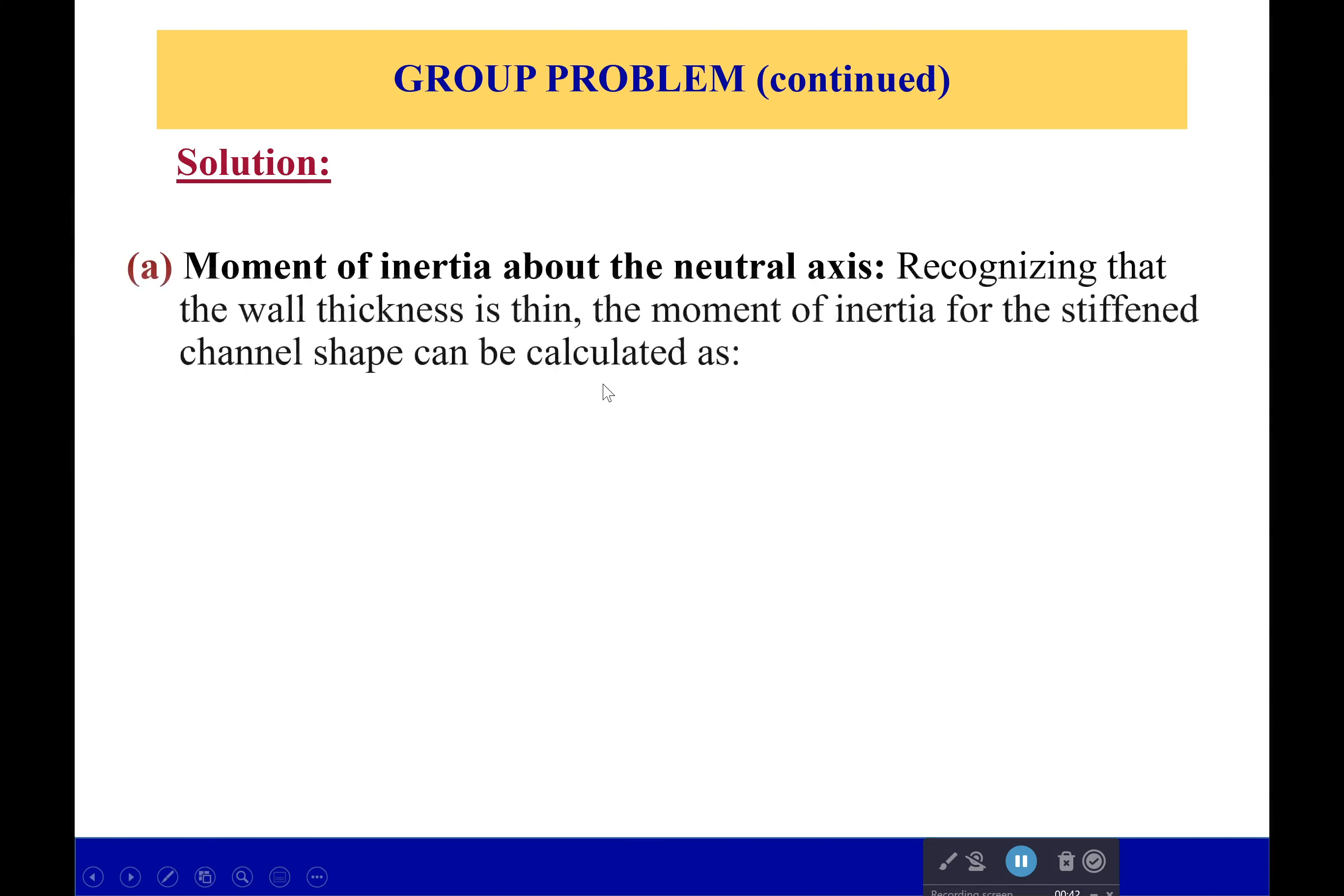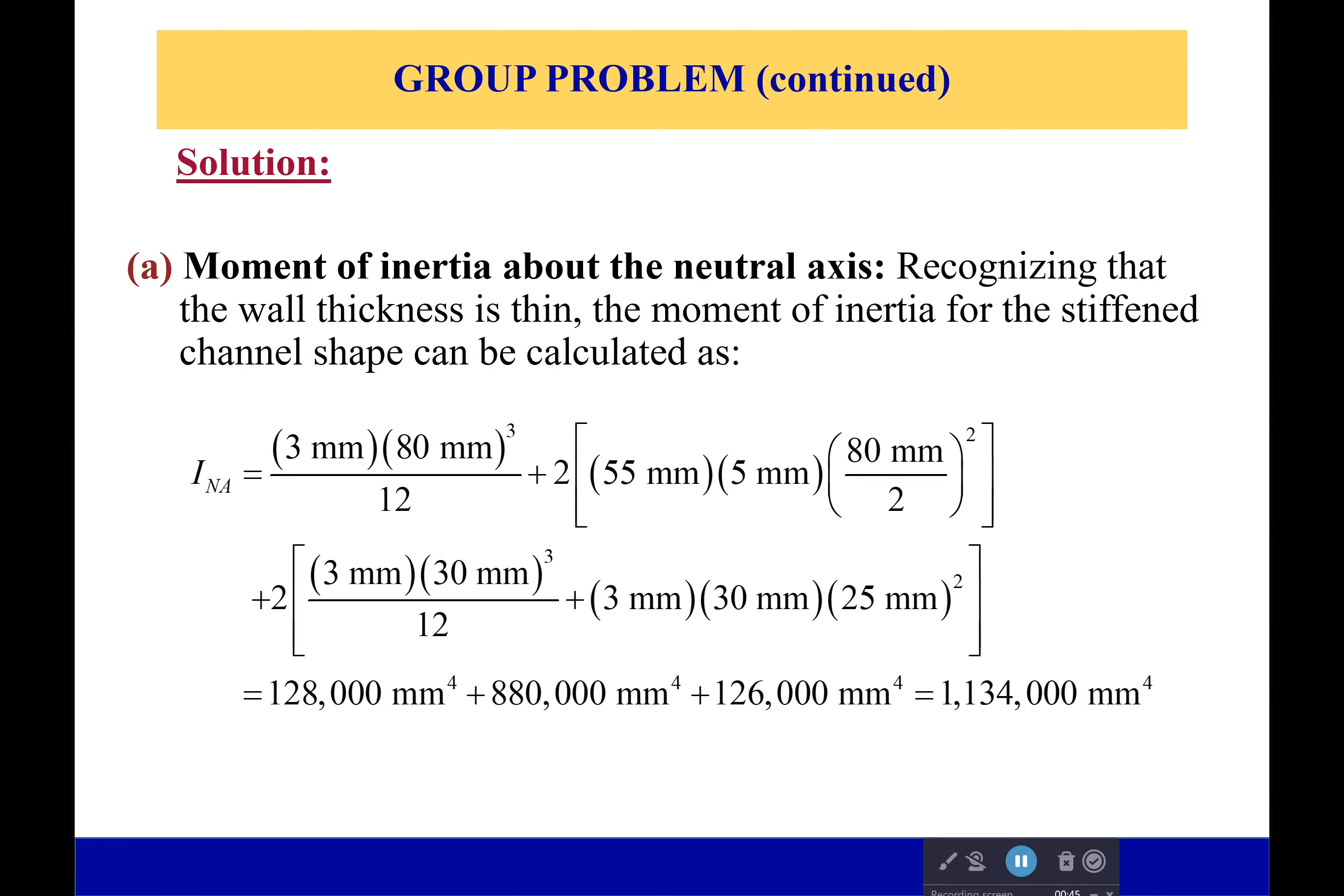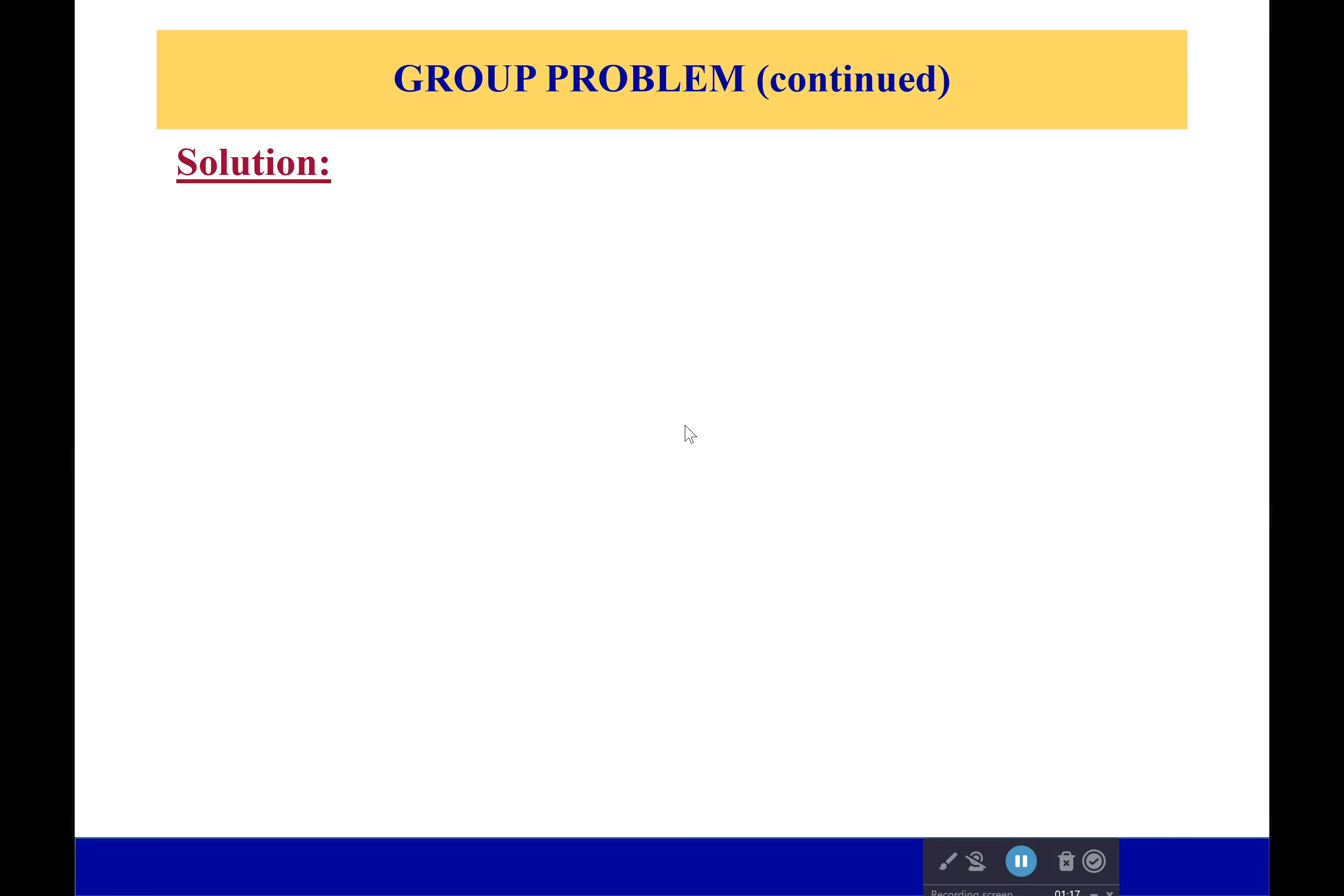First off, we're going to need to know the moment of inertia about the neutral axis. Luckily, our neutral axis is symmetric in the y direction, so we don't have to do anything there. But now we need our moment of inertia, and this is simply breaking apart all of our pieces here to get that moment of inertia. I'll let you look at this. You can check it if you want to. But I'm not going to focus on this now. Just take me at face value. The moment of inertia is correct. It's going to be 1,134,000 millimeters to the fourth.